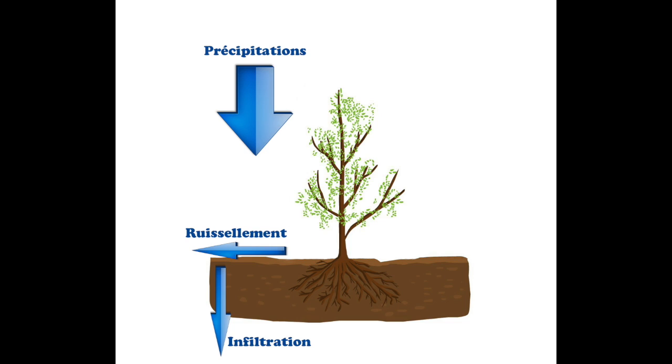vous avez l'eau qui va percoler, c'est-à-dire qui va s'infiltrer, de la même manière que dans un filtre à café, c'est ce qu'on appelle donc l'eau de gravité qui va s'échapper vers la nappe phréatique par infiltration.